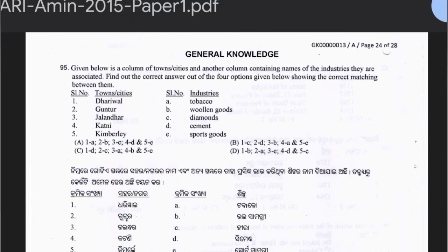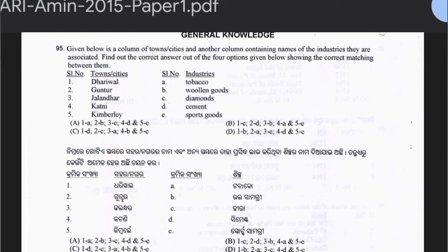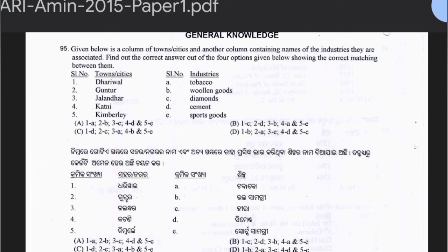Question 95: Match towns and industries. Dharavi — Tobacco; Guntur — Woolen Goods; Jalandhar — Diamond; Cuttack — Cement; Kimberley — Sports Goods. Dharavi is actually associated with Woolen Goods. Option D is the correct answer.